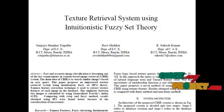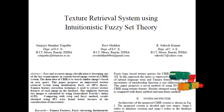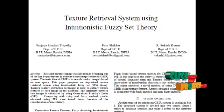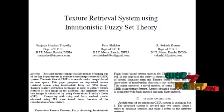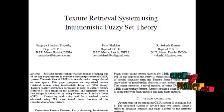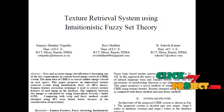Tamura features are of three kinds. The first one is coarseness, which describes texture granularity. The second one is contrast, the difference in intensity among neighboring pixels. The third one is directionality, the placement of the texture primitives. We introduce a novel method of using IFS theory.